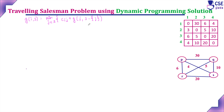We start with the source vertex. Here P is vertex 1, Q is vertex 2, R is vertex 3, and S is vertex 4. In the Traveling Salesman Problem, the salesman starts from one city — the source city — visits all other cities exactly once, and finally returns to the starting city. Here the starting city is P, that is vertex 1.